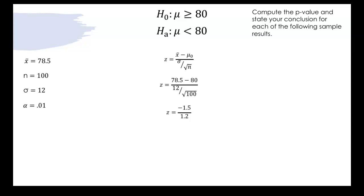That then simplifies down into negative 1.5 over 1.2. When you do that math you'll see that your z-score ends up as negative 1.25.